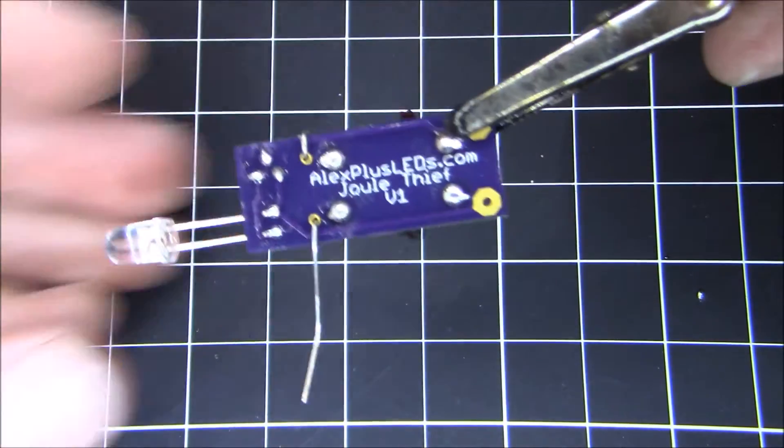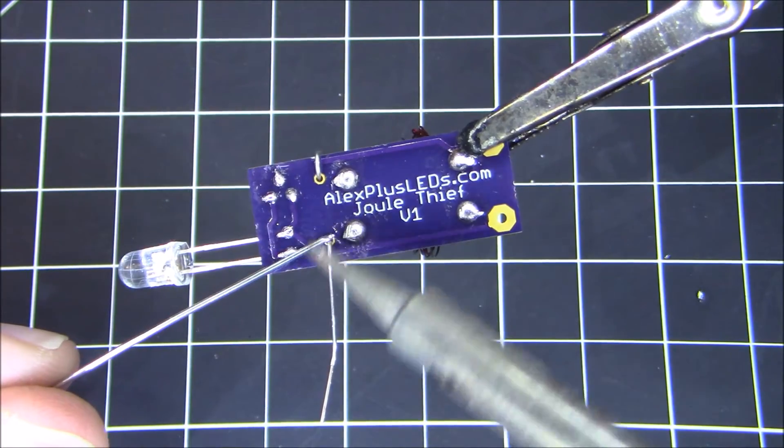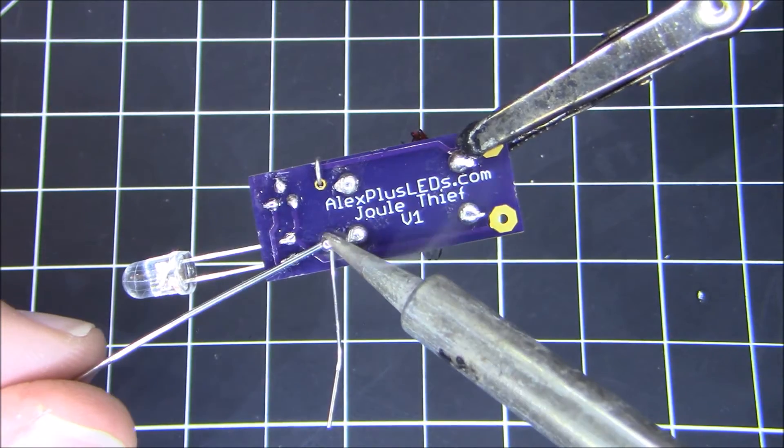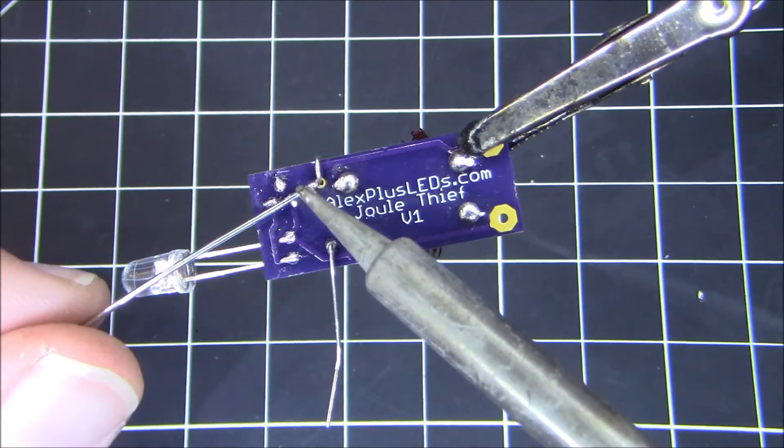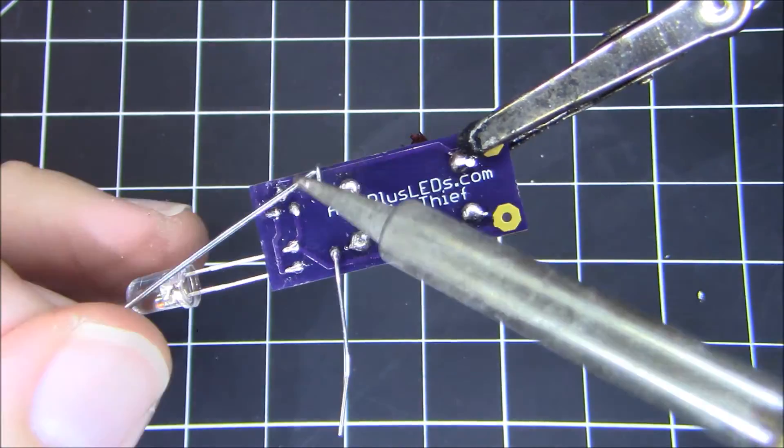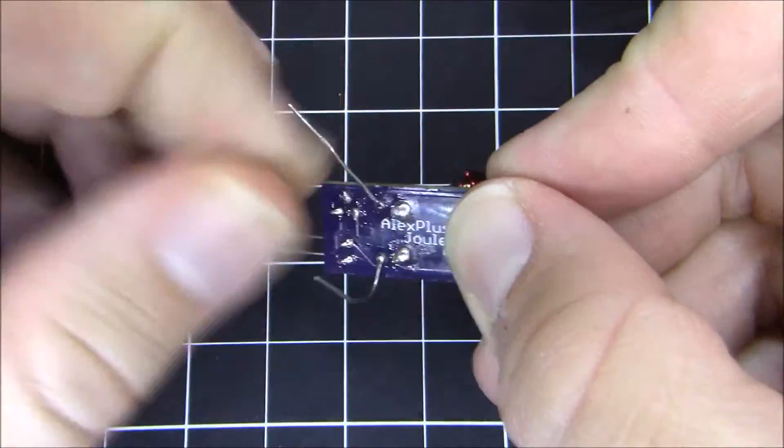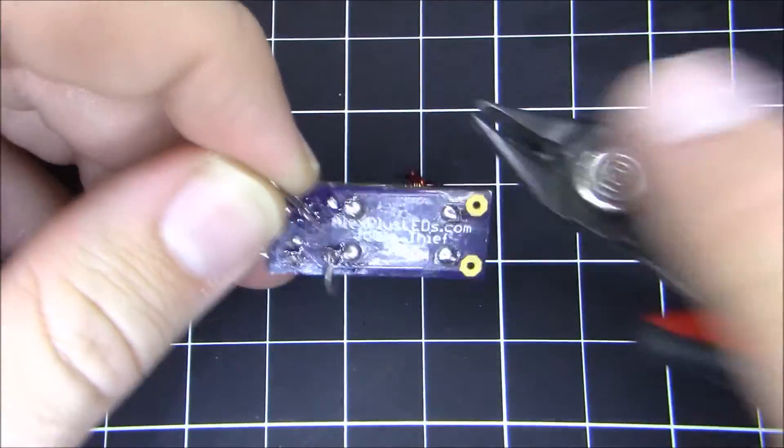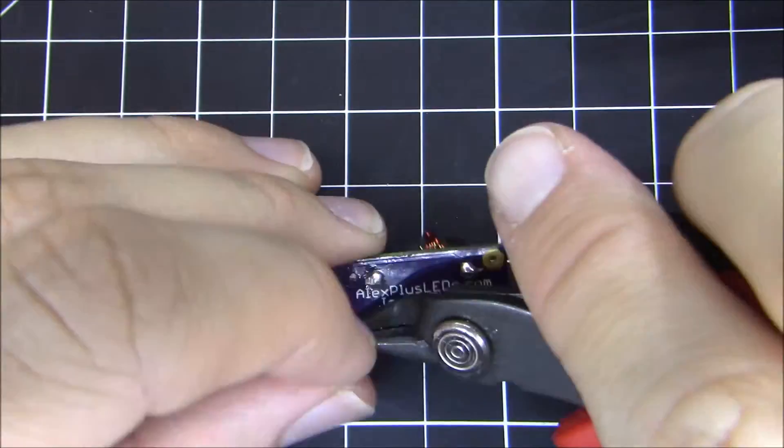And then we're going to solder this resistor into place. Solder the bottom and solder the top lead. And once those are soldered, we're going to trim off the leads with our wire cutters so that you don't short out on anything.